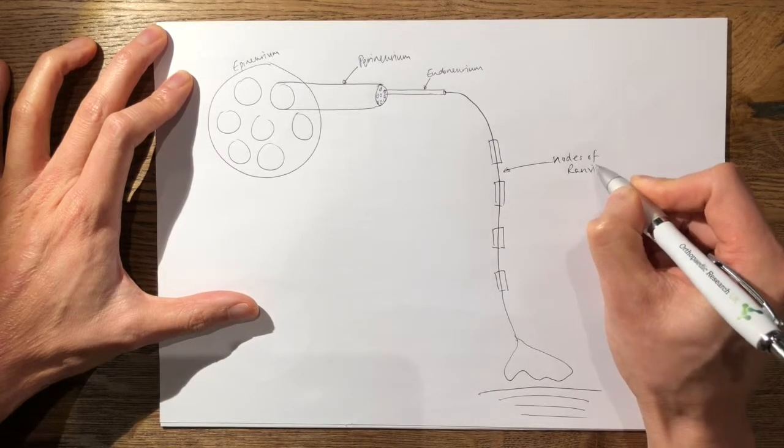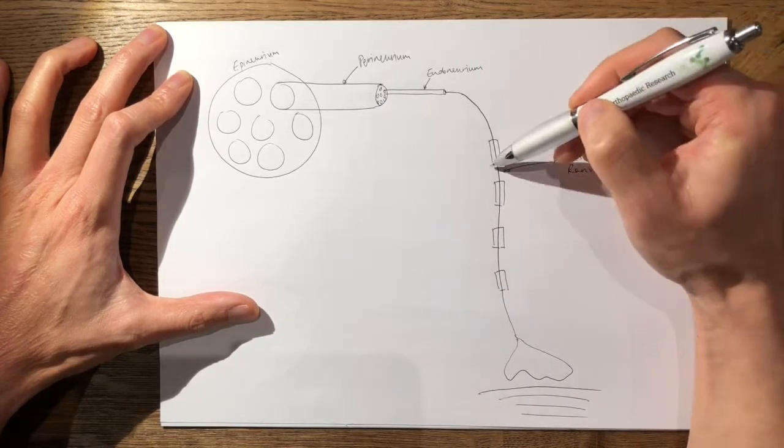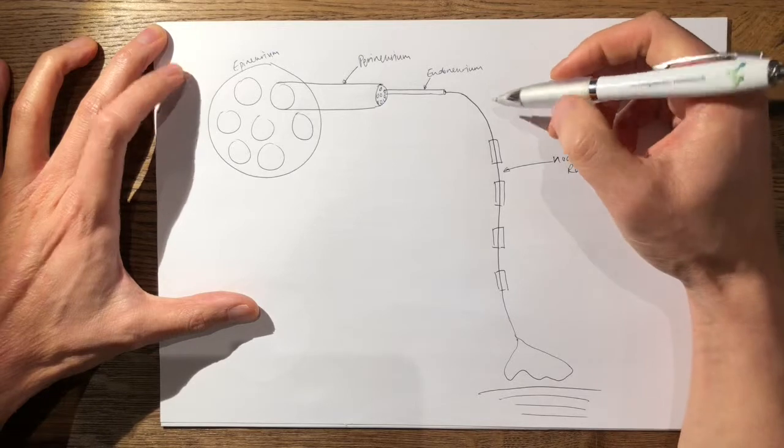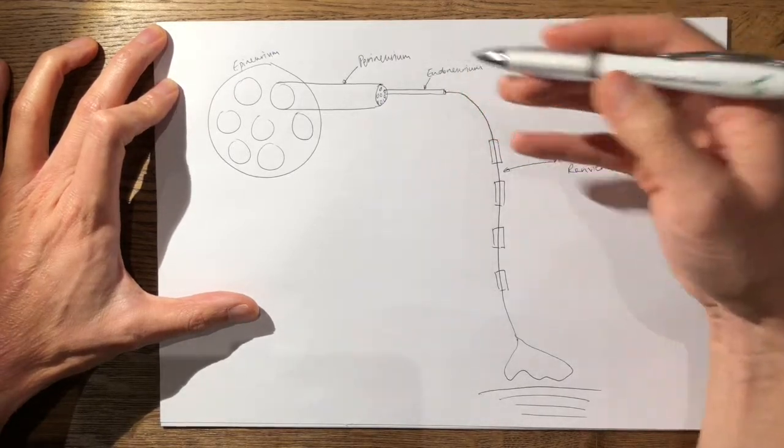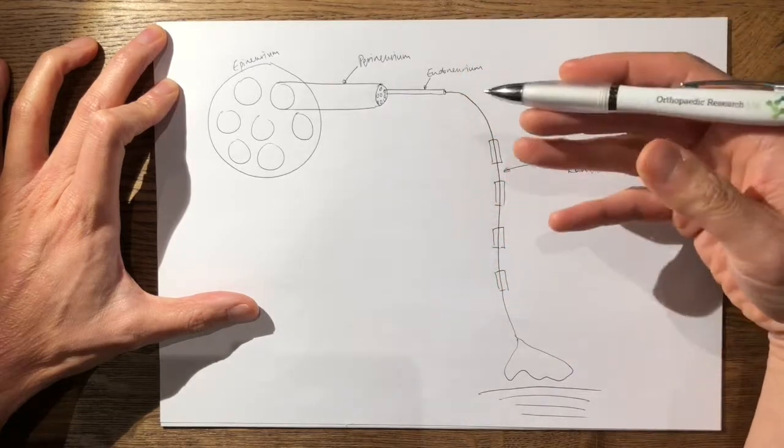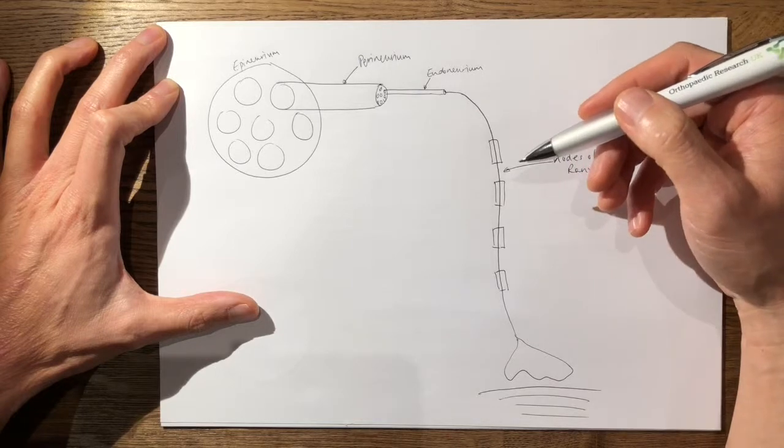The function of the Schwann cells is that it increases the velocity of conduction of your action potential via saltatory conduction. And that's a buzzword for the exam.